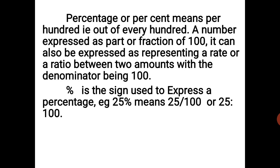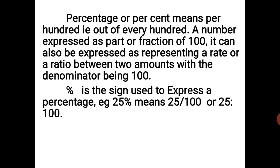It can be a ratio — for example, 25 is to 100 — or a fraction, like 4 over 100. The denominator is always one hundred. This is the sign used to express a percentage: %. For example, 25% means 25 over 100; 50% means 50 over 100; 4% means 4 over 100, and so on.